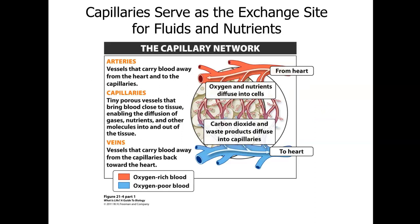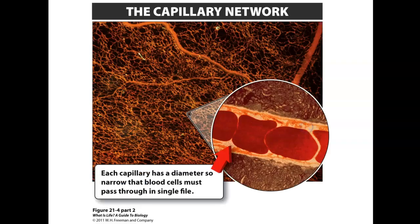Arteries carry blood away from the heart to the capillaries, where oxygen and nutrients diffuse into tissues and waste products and carbon dioxide diffuse back into the veins. The smallest arteries at capillaries are called arterioles, and the smallest veins are called venules. Each capillary has a diameter so narrow that blood cells must pass through in a single file line.